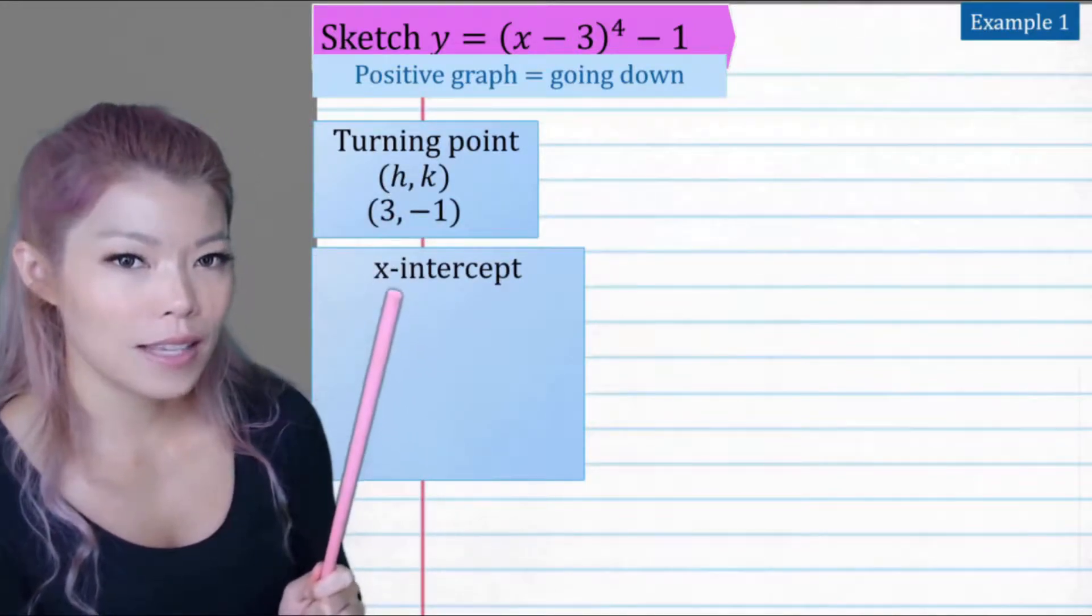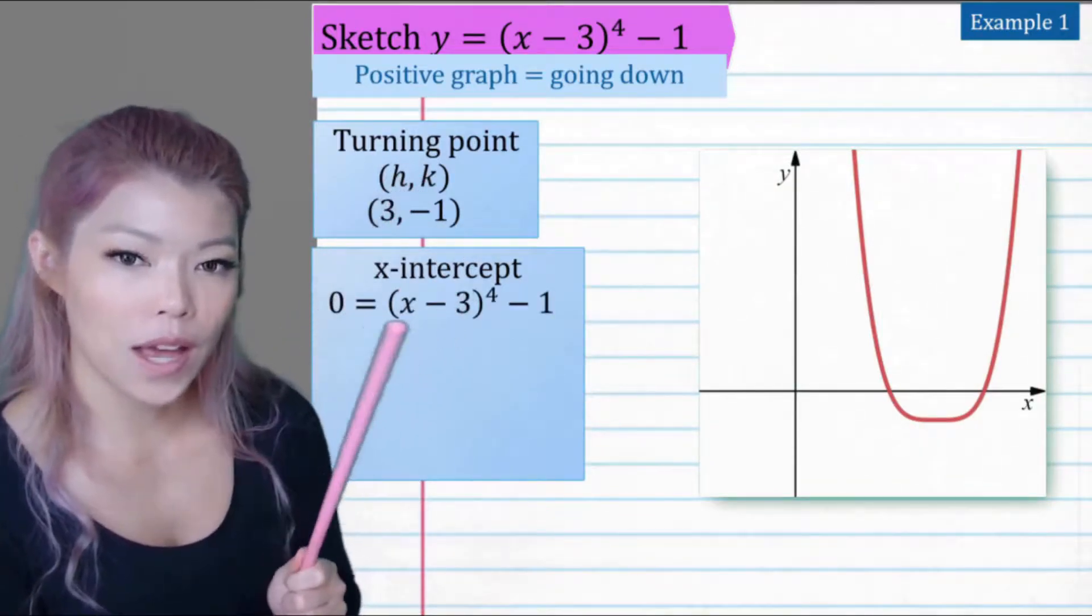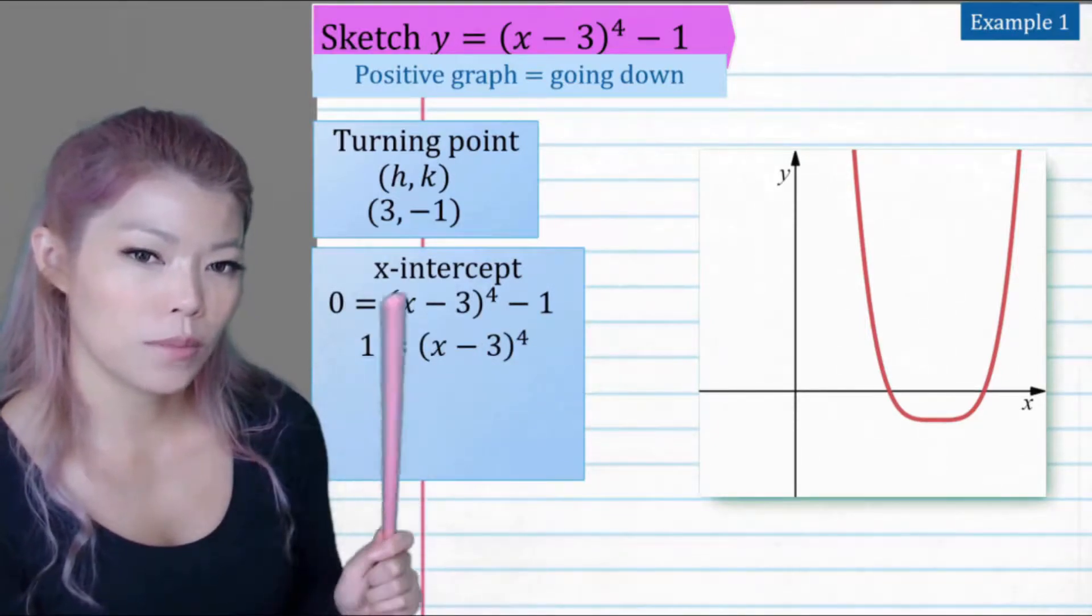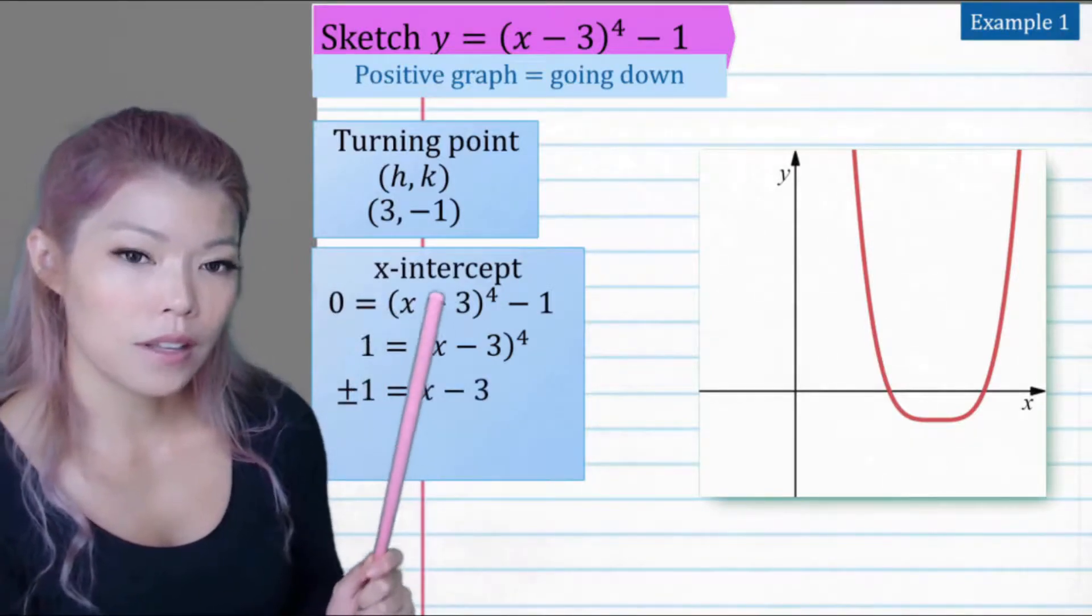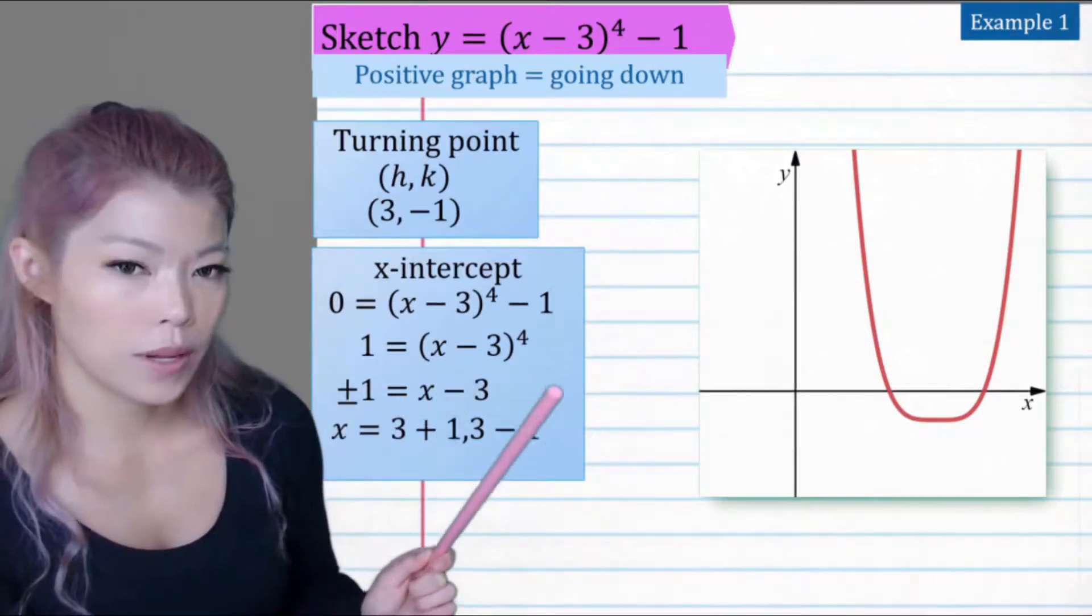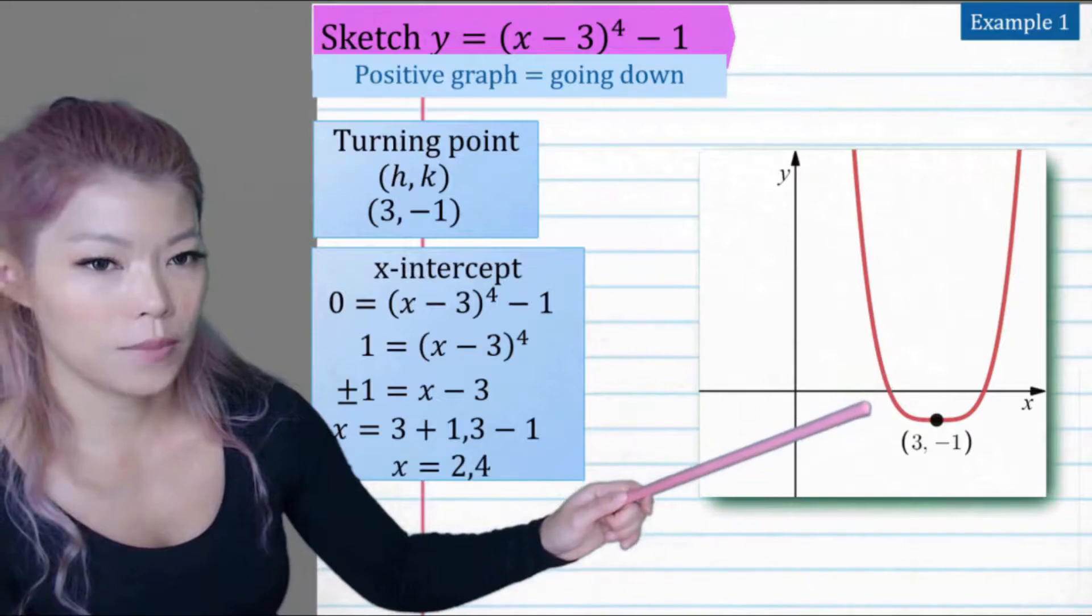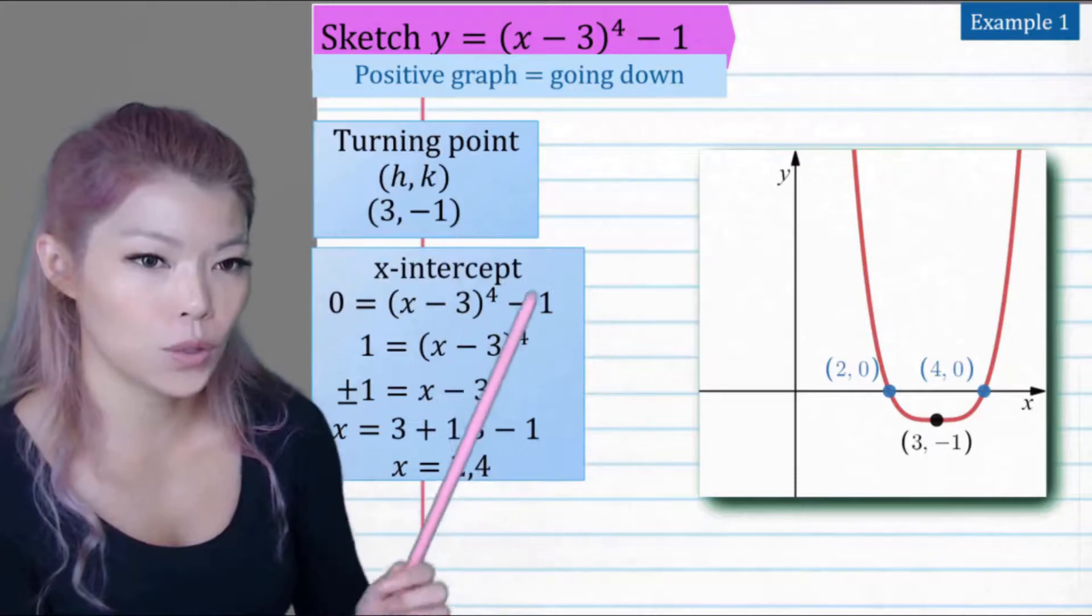Whereas the x intercept is when y equals 0, and we can solve for that. So bring the 1 over, then what times what times what times what is 1, that's the 1. So plus or minus 1. And then bring the 3 over, we have 3 plus 1 or 3 minus 1, or in other words, 4 and 2. So the intercepts are 4 and 2, and the point of inflection is 3, minus 1.